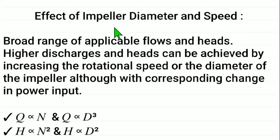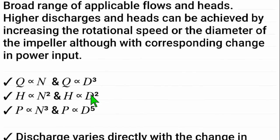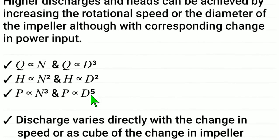Effect of impeller diameter and speed: broad range of applicable flows and heads. Higher discharges and heads can be achieved by increasing the rotational speed or the diameter of the impeller, although with corresponding change in power input.